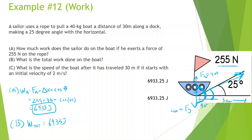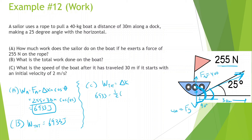Part C: what is the speed of the boat after it travels 30 meters if it starts with an initial velocity of 2 m/s? We'll use the work-energy theorem: work total equals change in kinetic energy. So 6,933 equals one-half × 40 × v_final² minus one-half × 40 × 2². Solving: 6,933 plus 80 divided by 20, then take the square root, gives us 18.73 meters per second.